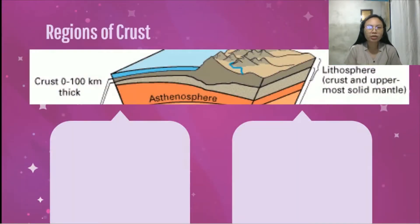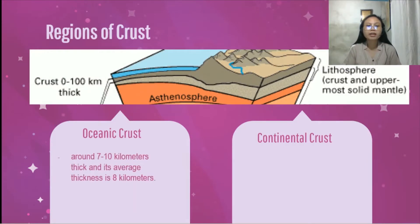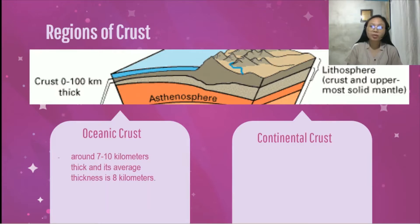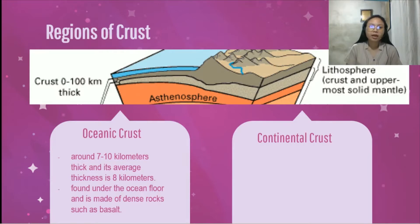We have here a picture showing the regions of the crust — the oceanic and the continental crust. The oceanic crust is around 7 to 10 kilometers thick and its average thickness is 8 kilometers. It is found under the ocean floor and is made of dense rocks such as basalt. In the picture, we can see the continental crust under the ocean floor.